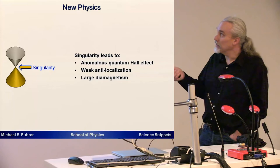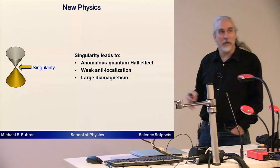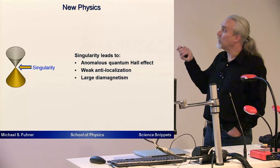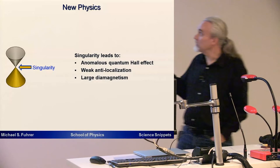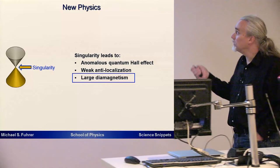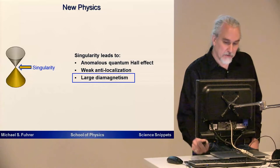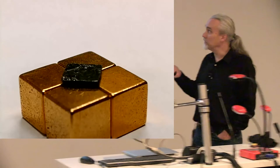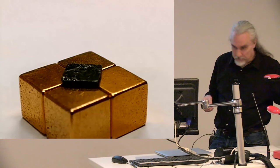That's something that's unusual. Also, there's this funny singularity here—there's a point at the end of the cone. This singularity leads to some unexpected new physics. There's an anomalous quantum Hall effect in graphene, there's something called weak anti-localization instead of weak localization. Maybe the last one is something that at least we can visualize. Graphene turns out to be very diamagnetic—it's repelled by magnetic fields. This is actually a property that carries over into graphite.